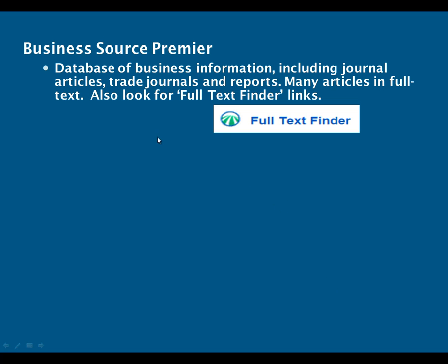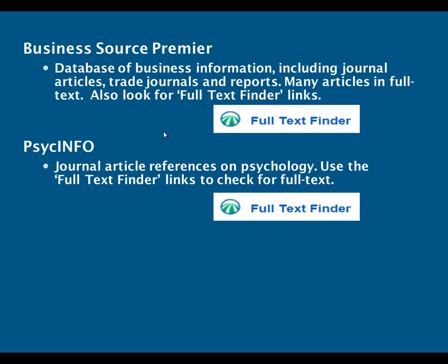The main alternative is called Business Source Premier, and as its name suggests, this is a very business-focused database covering all aspects of business. It includes journal articles, trade journals and trade publications, reports, and other types of information. Many articles are available in full text with PDF buttons to click on. You may also see full text finder buttons, which very often lead you to the full text of articles. For people studying human resource management, we also have a psychology database called PsycINFO, which provides articles and information about psychology, with full text finder links.